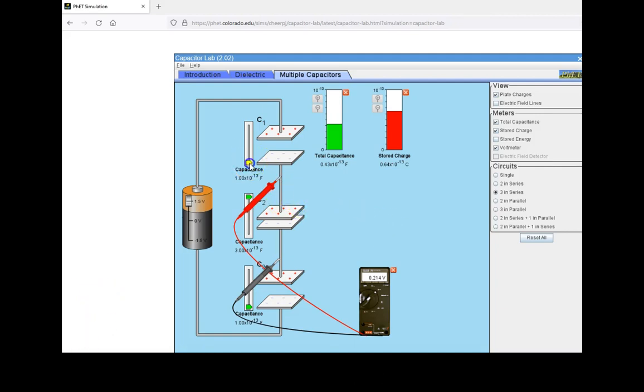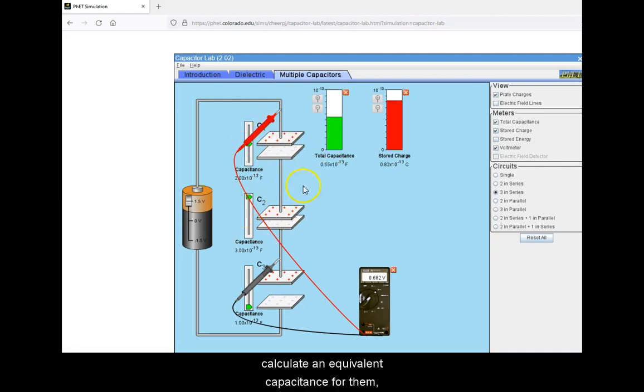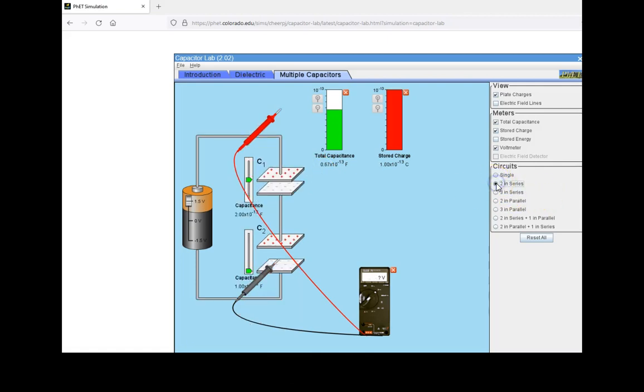Throughout, remember that when confronting more than two elements, you can always first calculate an equivalent capacitance for them before combining them into a single capacitance to be combined then again with a third one.